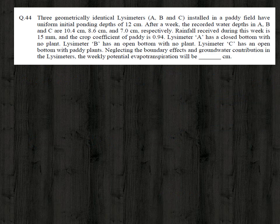The next question: three geometrically identical lysimeters A, B, and C installed in a paddy field have a uniform initial ponding depth of 12 centimeter. After a week, the recorded water depths in A, B, and C are 10.4, 8.6, and 7 centimeter respectively. Rainfall received during this week is 15 mm and the crop coefficient of paddy is 0.94.